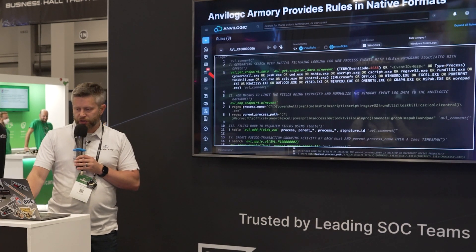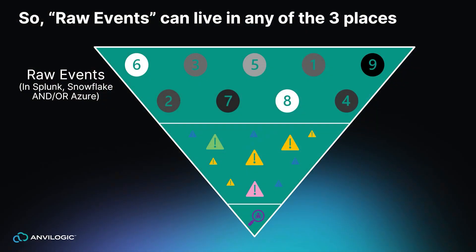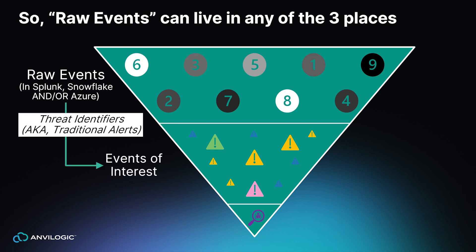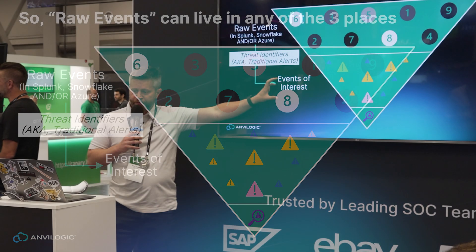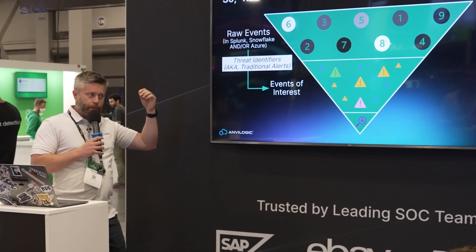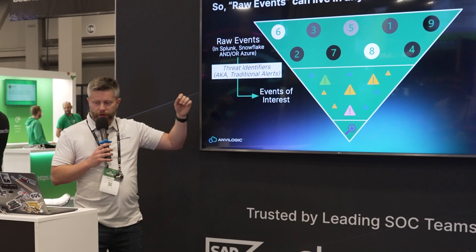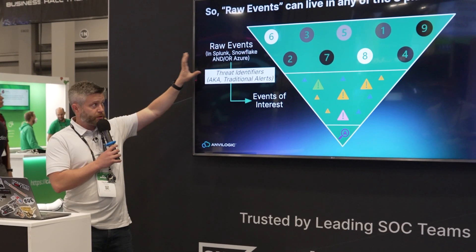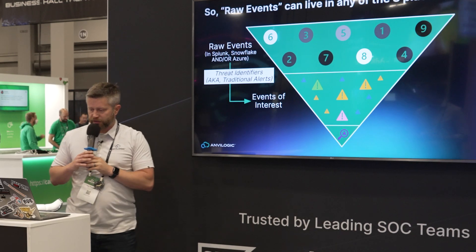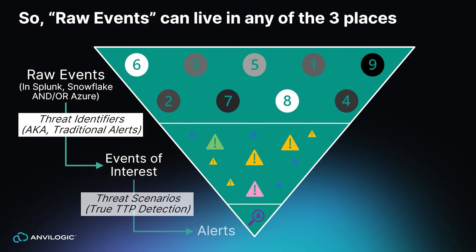That gives us an advantage where our raw events can live in any of the three places. With our framework, we're able to then cross-correlate. You have the raw data, you're looking for interesting events, and we're able to cross-correlate because all of our identifiers are funneling into our events of interest index. So when we find one of those office programs spawning a suspicious process — whether the data lived in Splunk, Snowflake, or Azure — it's all going to the same events of interest location. That then enables us to run scenarios to do true TTP detection on our normalized events of interest.